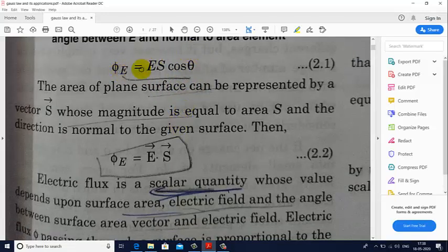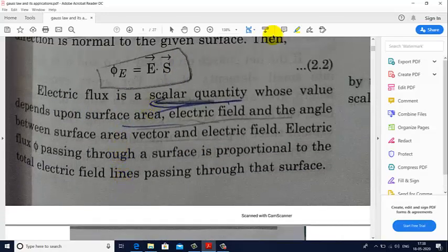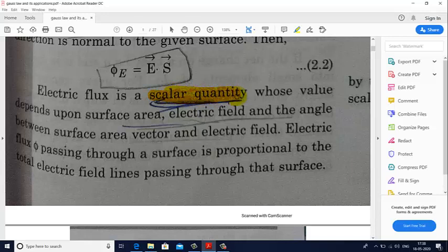If we write this formula in vector form, then we can write it as phi equals E dot S, because the dot product of E and S vectors will give us E S cos theta. You should remember that electric flux is a scalar quantity. It is not a vector quantity. The value of it depends upon surface area, electric field E, and the angle between surface area vector and electric field, that is theta. Electric flux passing through a surface is proportional to the total electric field lines passing through that surface.